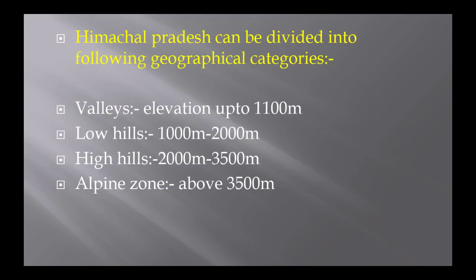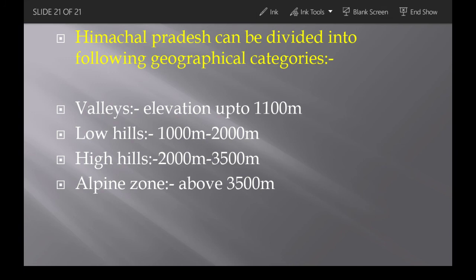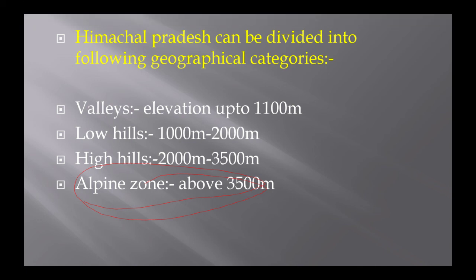Based on geographical categories, HP is divided as: below 1,100 meters — valleys; 1,000 to 2,000 meters — low hills; 2,000 to 3,500 meters — high hills; above 3,500 meters — alpine zone. These classifications based on various parameters are frequently asked in papers, which is why all of them have been covered. Thank you very much. Hope you liked it.